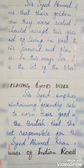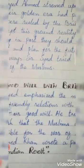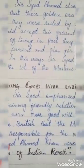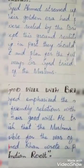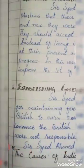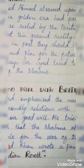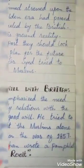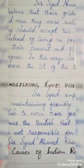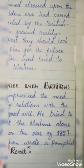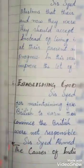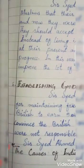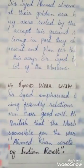Second heading: Establishment of Goodwill with British. Sir Sayyid Ahmed felt the need for maintaining friendly relations with the British to earn their goodwill. He tried to convince the British that the Muslims alone were not responsible for the war of 1857. Sir Sayyid Ahmed Khan wrote a pamphlet, "The Causes of the Indian Revolt."